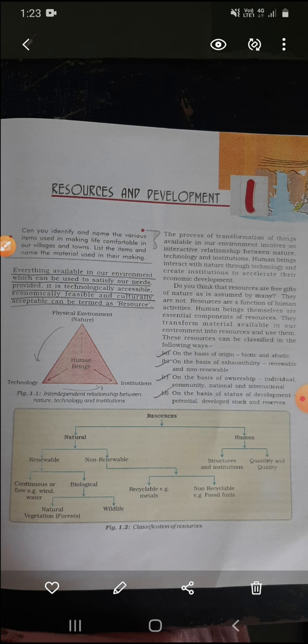Physical environment means our natural environment — resources, natural resources. So natural resources are dependent on technology. As long as you don't have technology, you cannot make any natural resource usable. Without technology, we cannot change anything into a useful good.